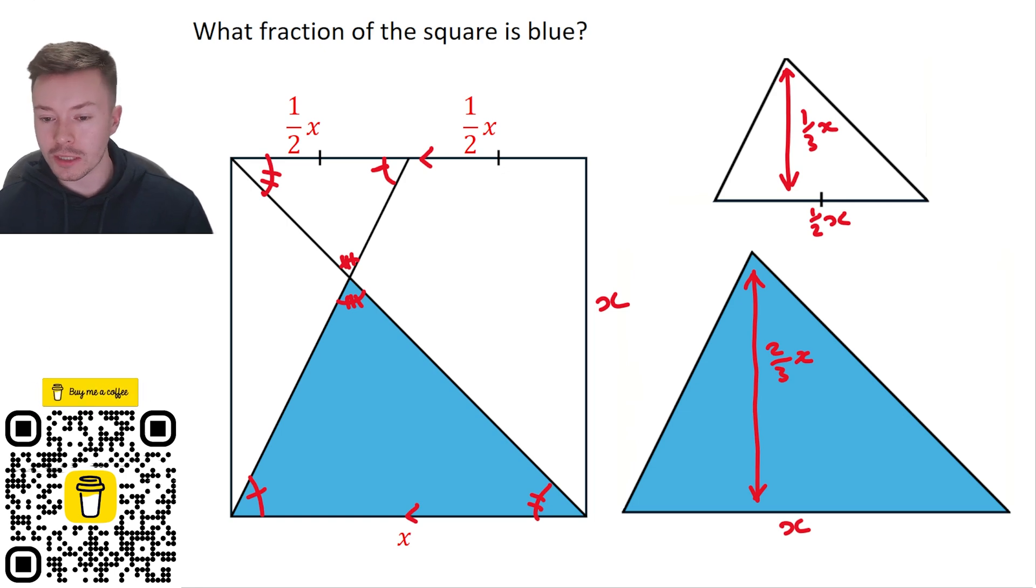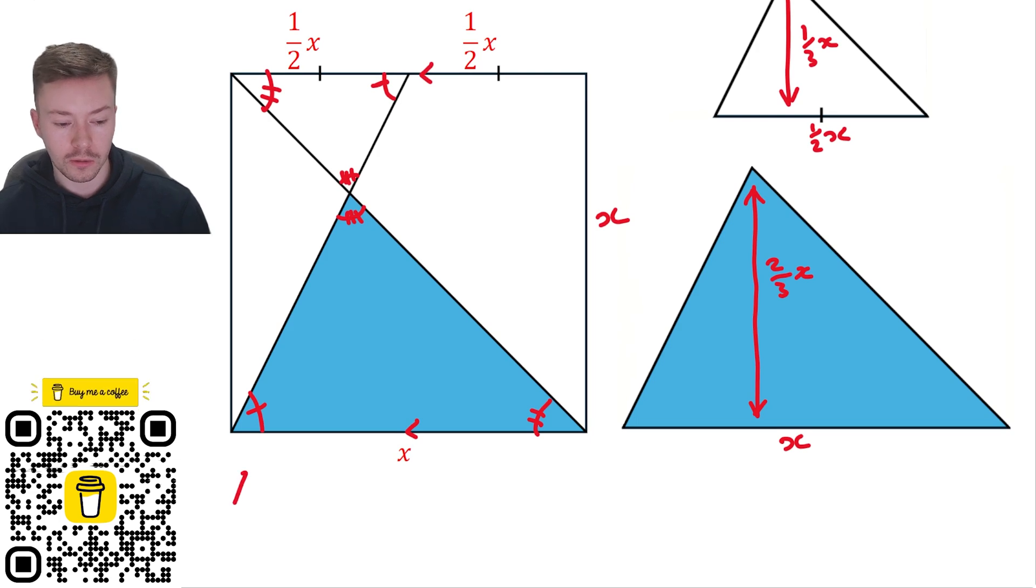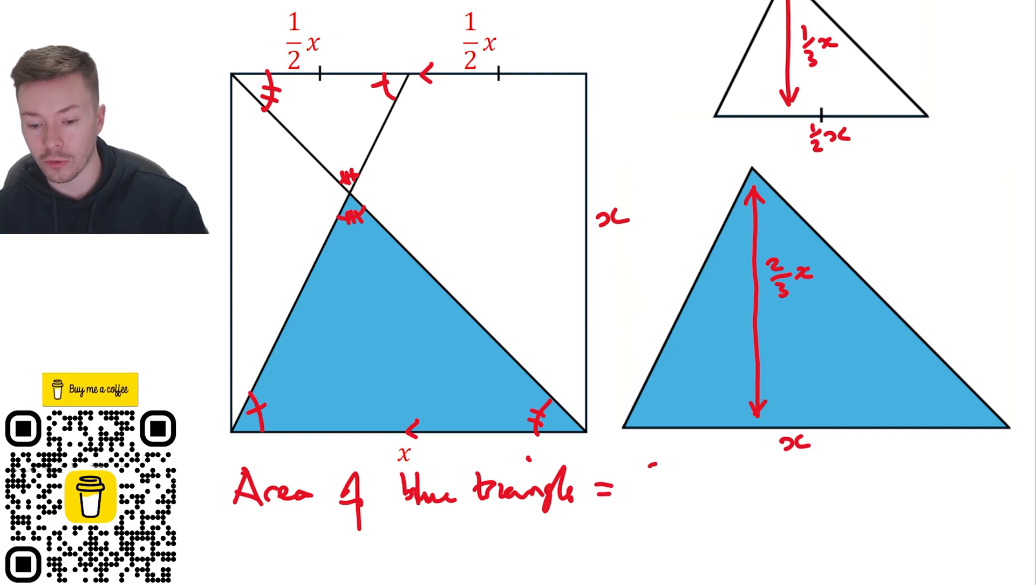Now what we then need to do is finally work out the area of the blue triangle, and we've already got the area of the square, which is x squared. Okay, so area of blue triangle is equal to two thirds of x times by x, so half the base times the height.